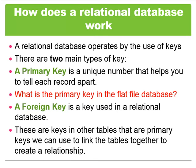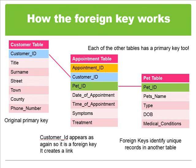If you look at this, we have the customer table with the main primary key. Notice how this appears as a foreign key in the appointment table; however, the appointment table still has its own primary key. Again, pet ID is the primary key in the pet table, but is linked by a foreign key in the appointment table.